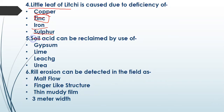The fifth question is: soil acidity can be reclaimed by use of which substance? The first option is gypsum, second one is lime, third one is leaching, and fourth one is urea. The answer is lime — lime is the correct answer to reclaim soil acidity.